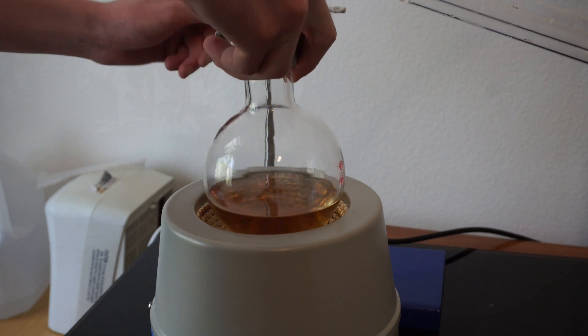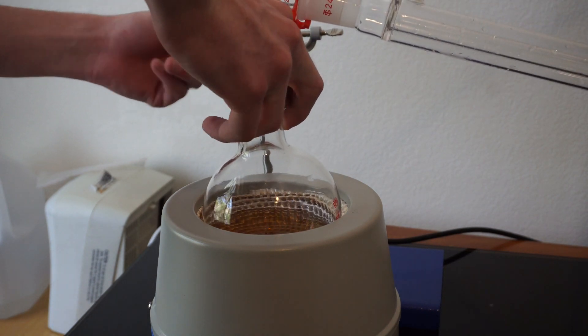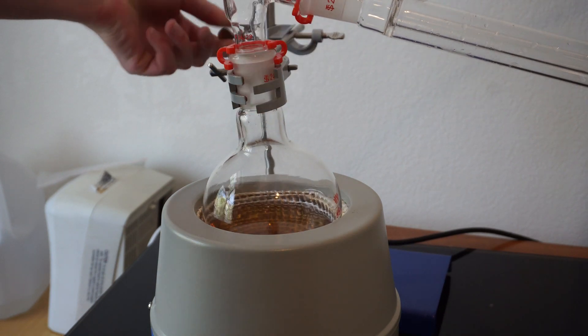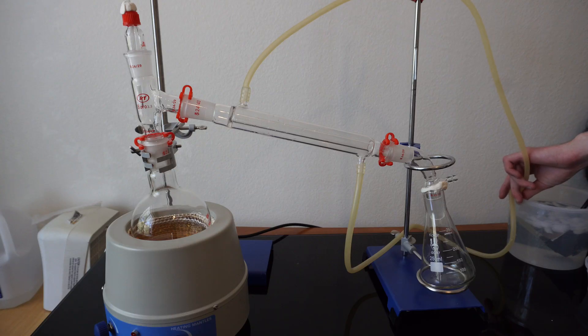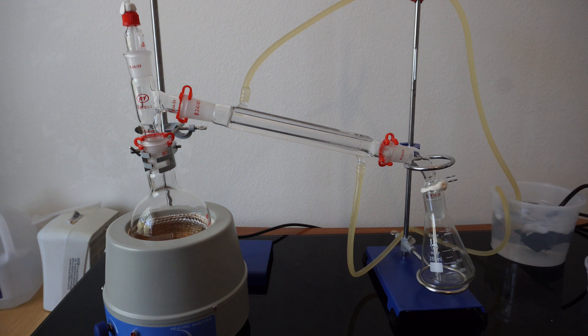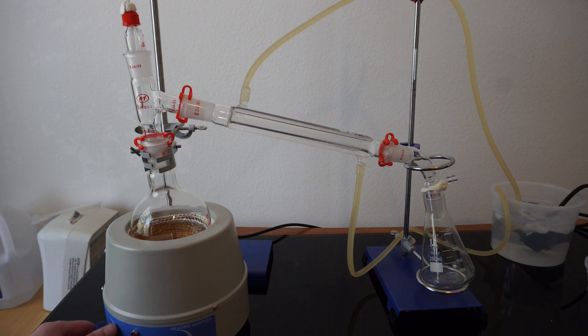I will then lower my boiling flask into the heating mantle to make sure everything is a good fit, and then turn on my water pump for my condenser. I use an ice bath of water to start out with, then will continue to add water to regulate the temperature. Followed by turning on my heating mantle.